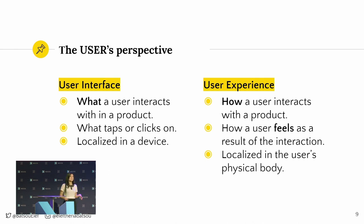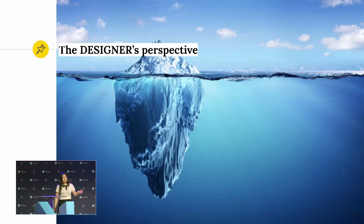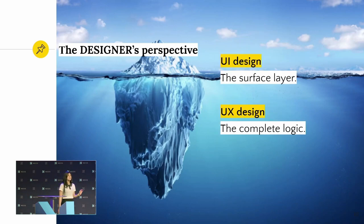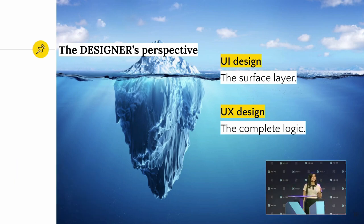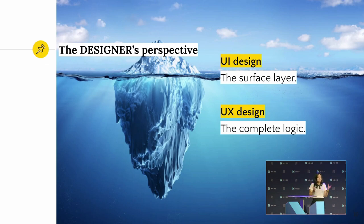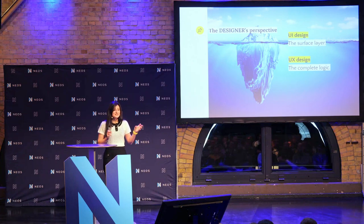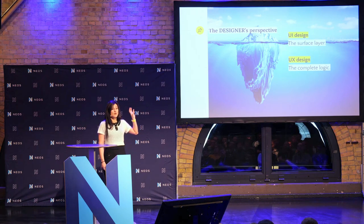User experience is how the user interacts with the product and how a user feels after interacting with it. The whole experience is localized in their body. So if we see someone holding an app and they are smiling, we can understand that something good is happening. But if they have a face like this, maybe we know that something isn't working as it should.